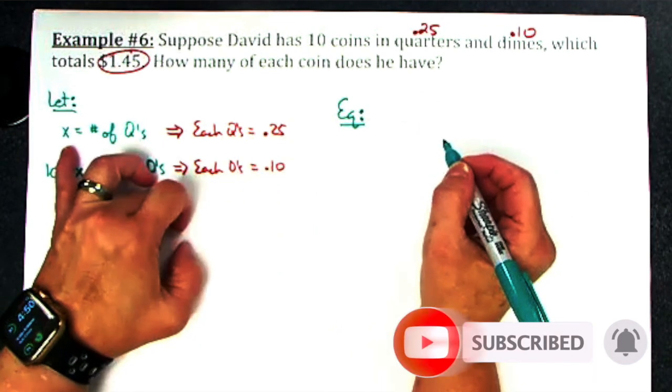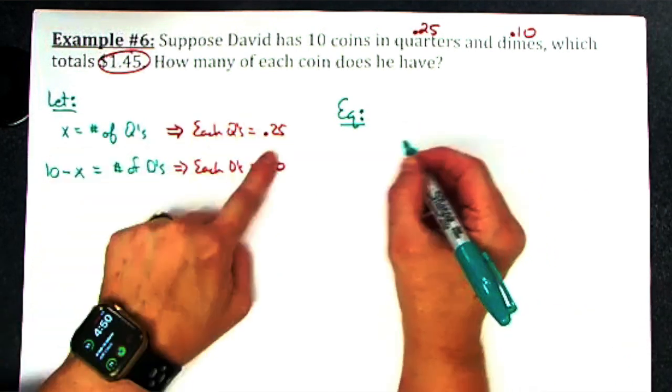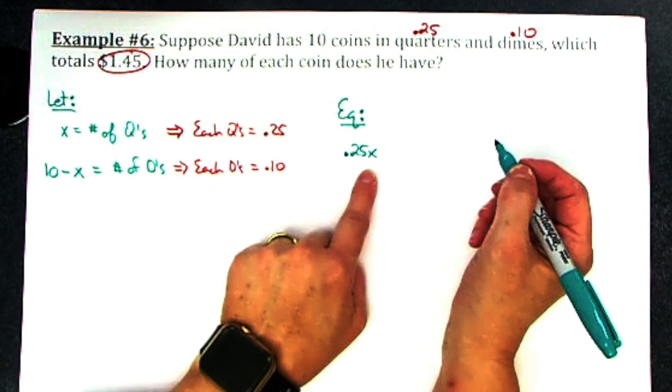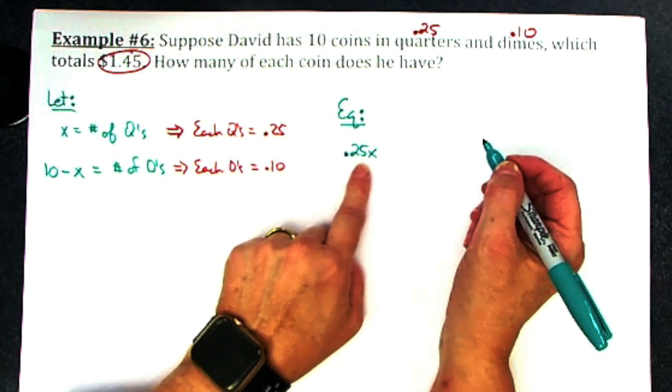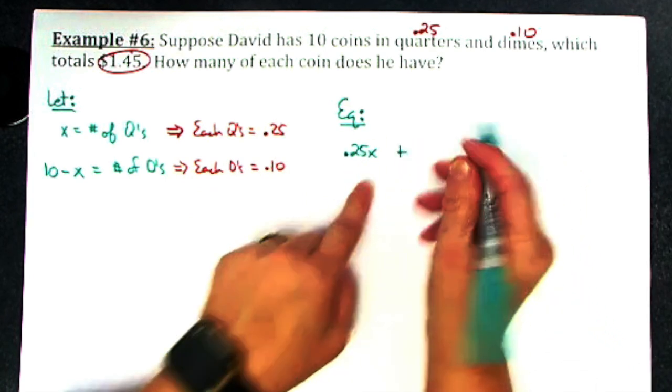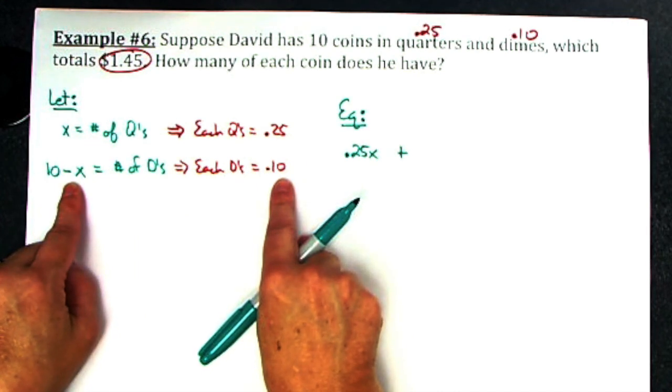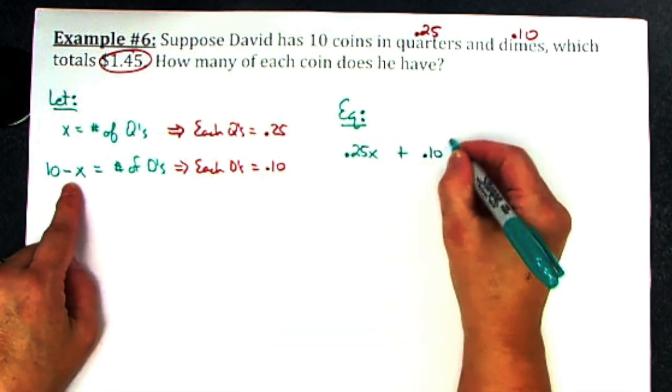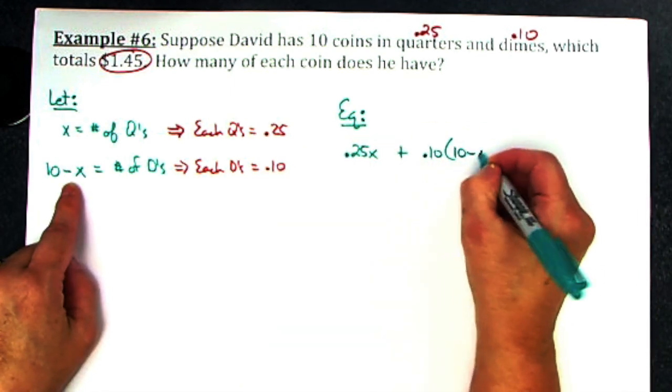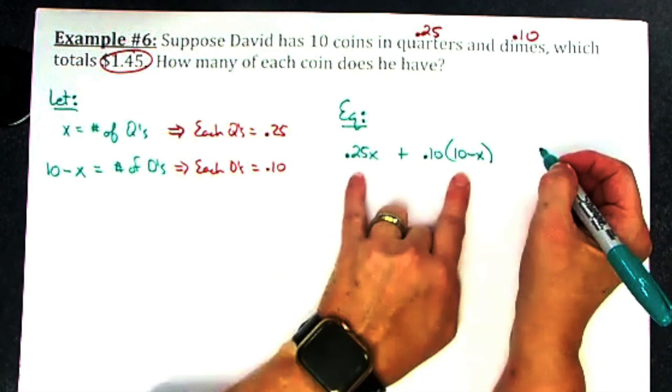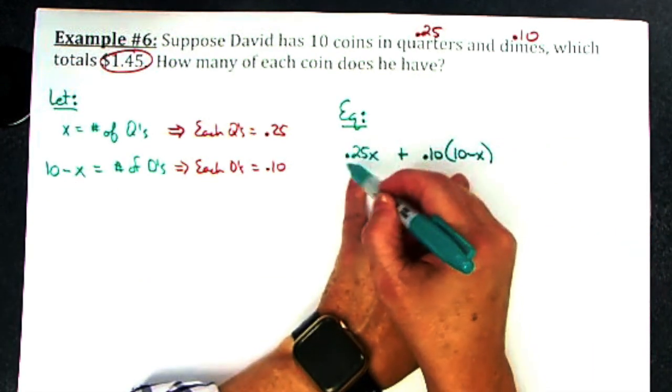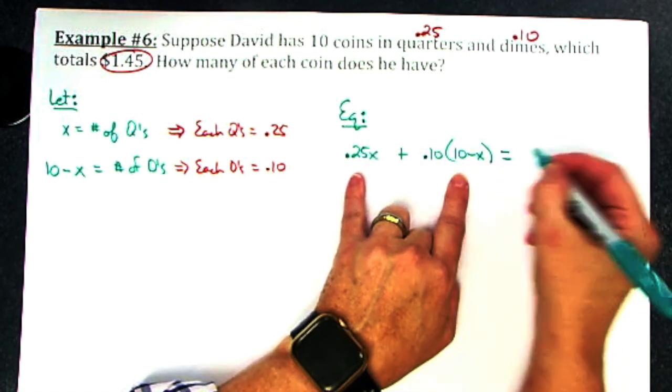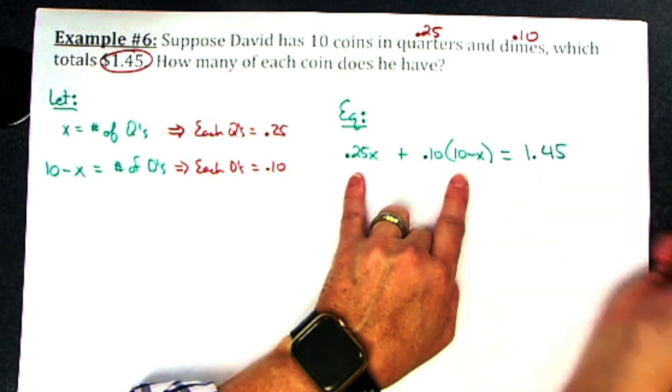I'm going to have the amount of money from the quarters, so 0.25x. Multiply those two things will give me the amount of money from my quarters, plus the amount of money from the dimes, so 0.10 times the number of dimes. That's all my money added up - the amount from quarters plus the amount from dimes - and that has to equal a dollar and 45 cents.